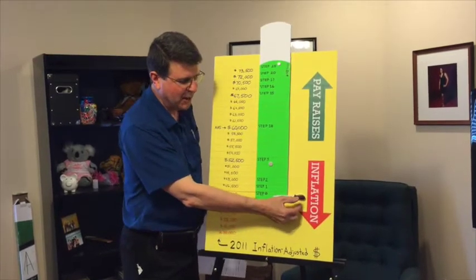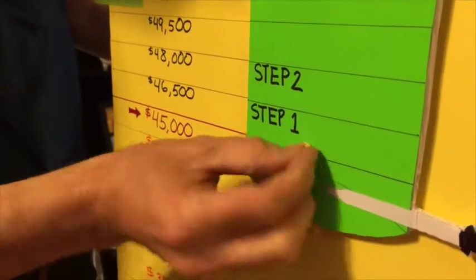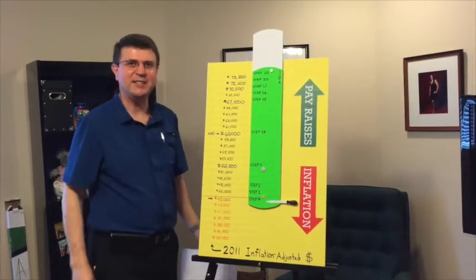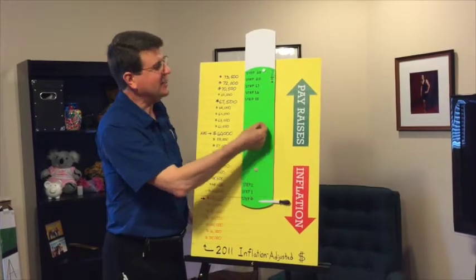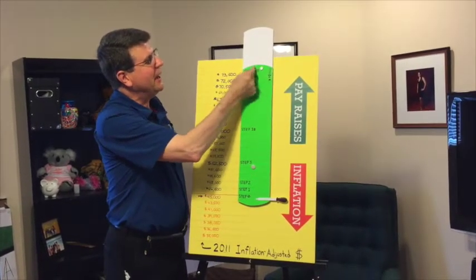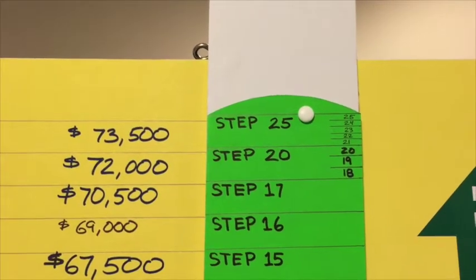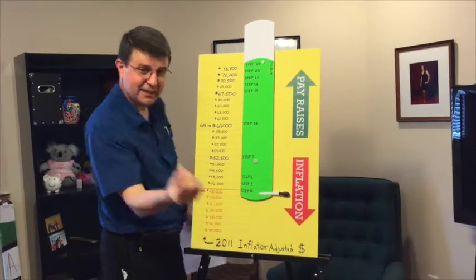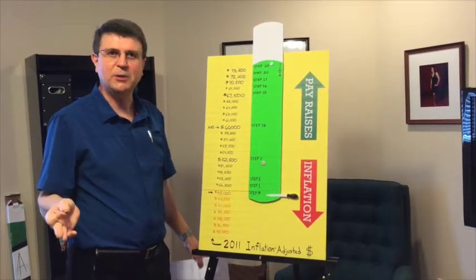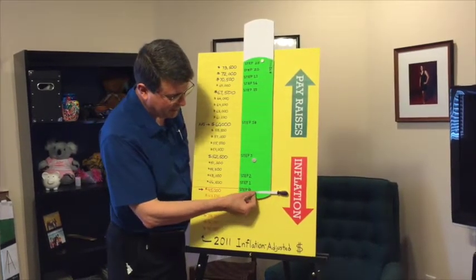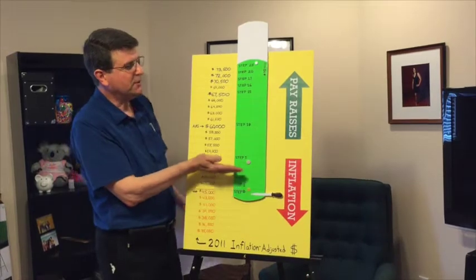Down here at the bottom we have a little eyedropper that's full of air, so if we squeeze it we can create a bubble that comes in like a new hire on step zero of the salary schedule. Each year that goes by, the little bubble will go up one step per year through this very thick liquid, making its way up to the top which is step 25, twenty-five years later. Here's a gray bubble — let's take this as a new hire, a teacher hired with a master's degree, called a rank two teacher.